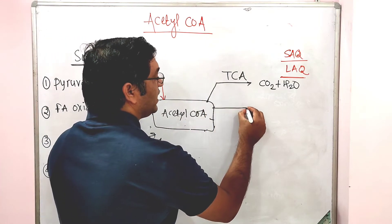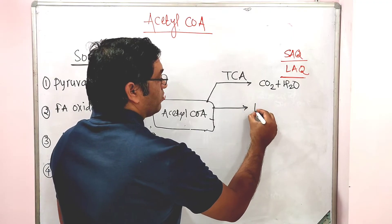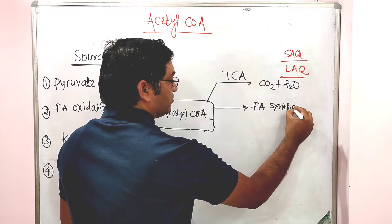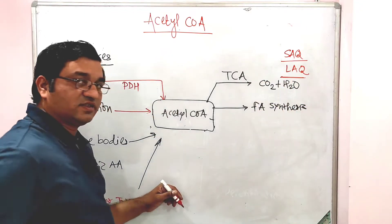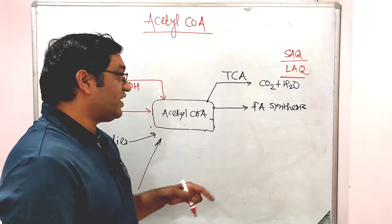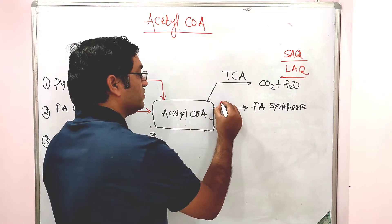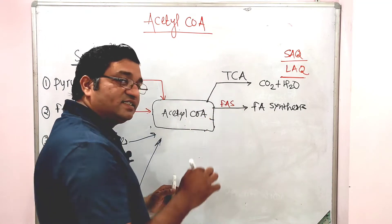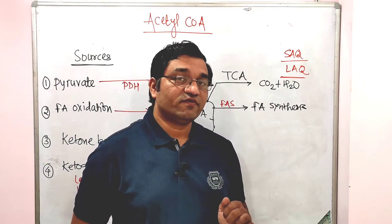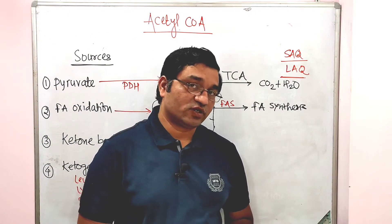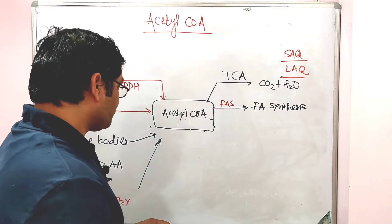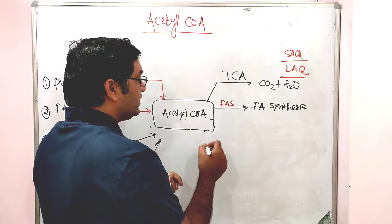The second important use of acetyl coenzyme A is for fatty acid synthesis. The fatty acid synthesis complex is a multi-enzyme complex composed of seven enzymes and one protein — the acyl carrier protein (ACP) — and it converts acetyl coenzyme A into fatty acids.